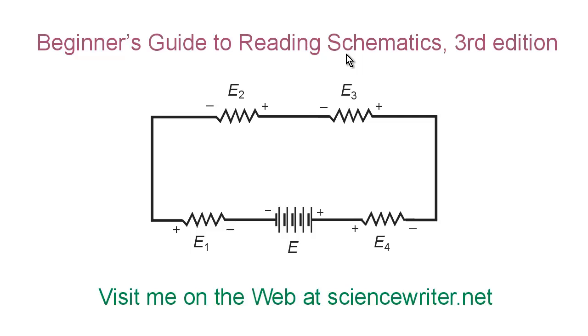We're looking at figure 6-6 on page 123. It shows a battery with a voltage E and four resistors in series connected across the battery. The voltages across those resistors are E sub 1, E sub 2, E sub 3, and E sub 4.